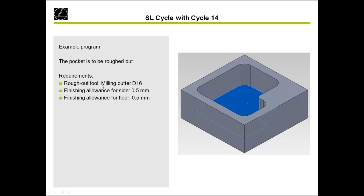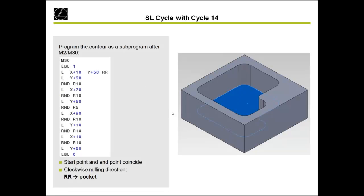Our first example is a pocket with a special contour — not a standard geometric shape — which we program with SL cycles. I always start with the subprogram containing my contour label. Label 1 contains the contour with only X and Y coordinates and RR radius correction. I program it clockwise — so inside the contour, radius correction right. And importantly, label 0 closes the subprogram.